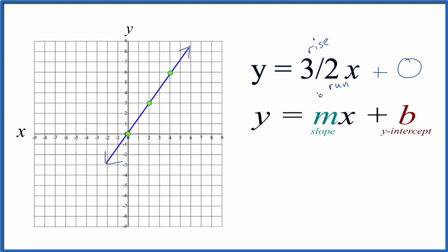You could have used a table of values to graph y equals 3 over 2 x. In this case, we use slope-intercept formula. And again, that works really well, especially when we have fractions here.